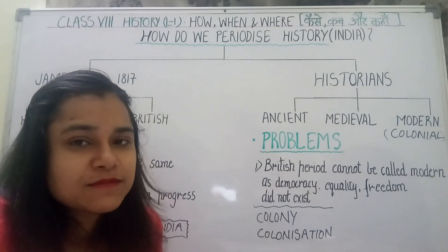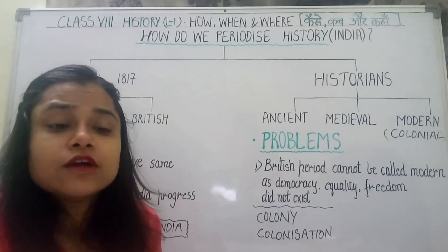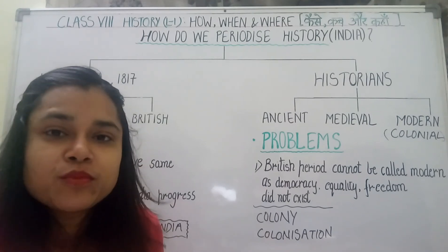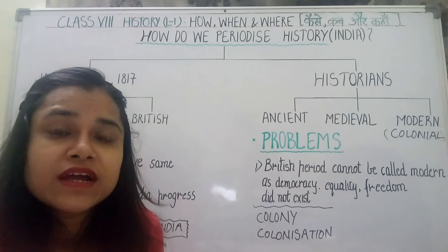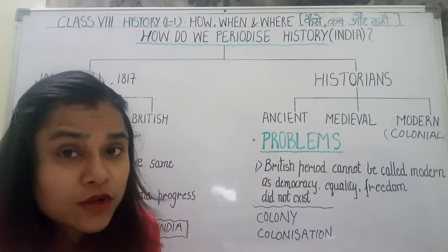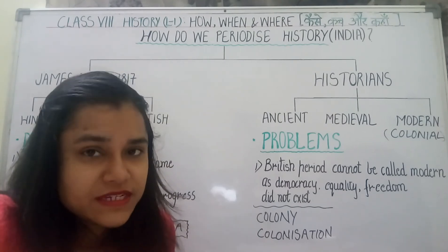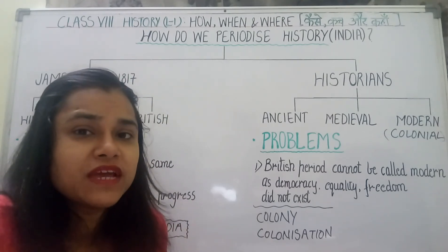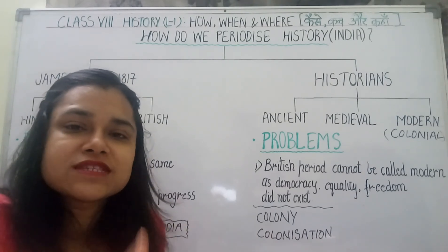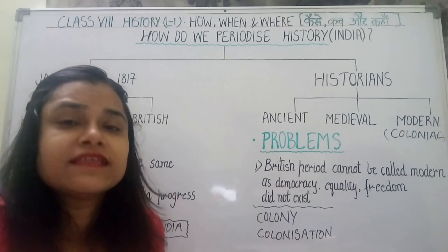Ab ye colonial kya hota hai? Iska matlab bhi samajh lete hain. Colonial government — ye word nikla hai colony se. Colony kya hai? Colony voh country hoti hai jis pe koi doosari country capture kar le aur usko poori tarah se apne under le le. So when a country is subjugated by another country politically, socially, economically, then that country is called a colony. India ko capture kiya tha British ne, so India was a colony of Britain. And this process of subjugation — jab ek country doosari ko apne under leti hai aur uski saari cheezein dheere dheere apne adhikar mein leti hai — toh is process ko kehte hain Colonization. Aur woh jo sarkaar hoti hai, nai wali sarkaar, usko kehte hain Colonial Government. Aur iska Hindi term hai Upniveshik Sarkaar.